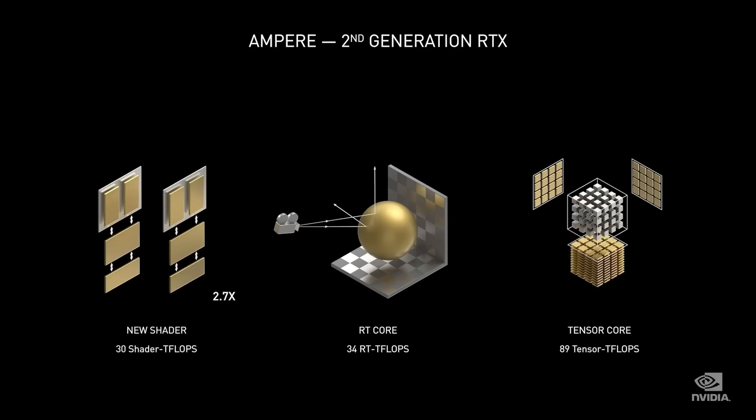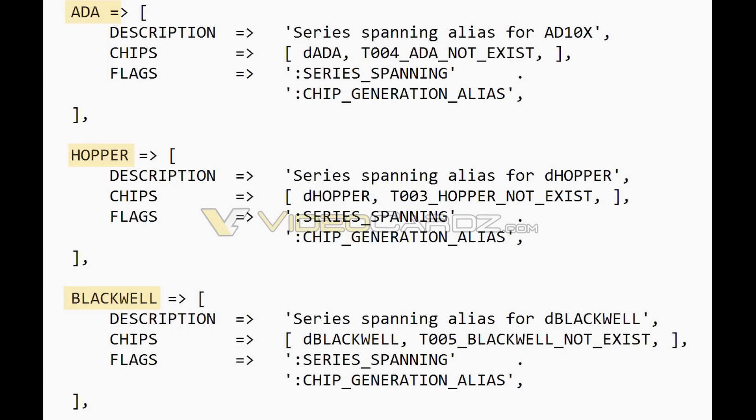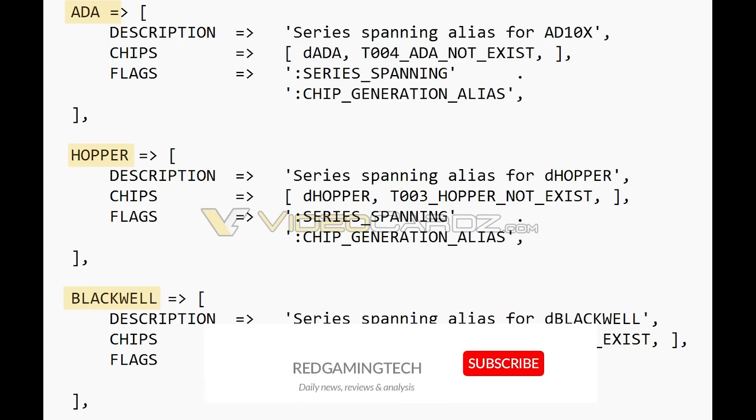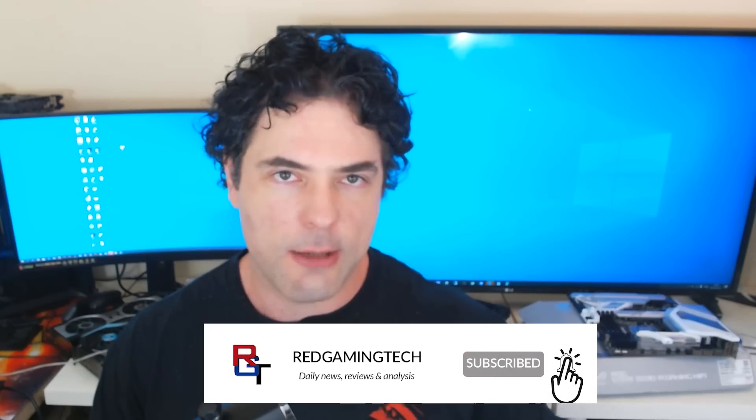I think AMD and Nvidia are just going to be going absolutely ballistic with releases over the next couple of years. The next couple of architectures from both companies are going to be really interesting. Blackwell does now seem to be monolithic — I had previously been told it was both monolithic and chiplet, much like AMD's RDNA 3 architecture where higher-end products are chiplet. But this doesn't seem to be the case anymore, unless something changes again, as Nvidia's plans change faster than most people change their underwear.